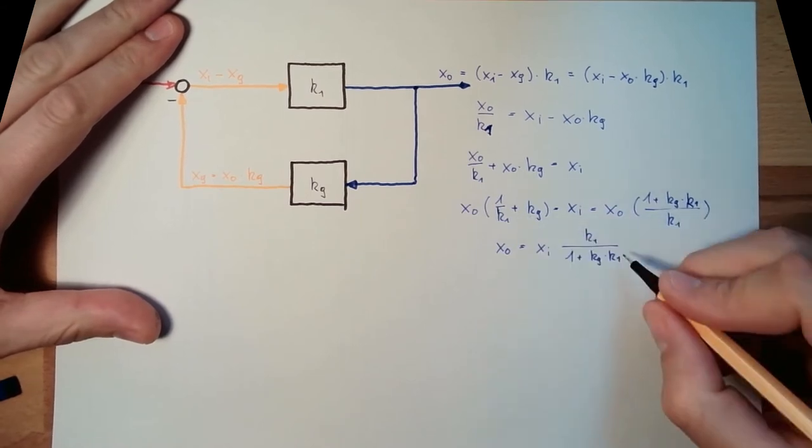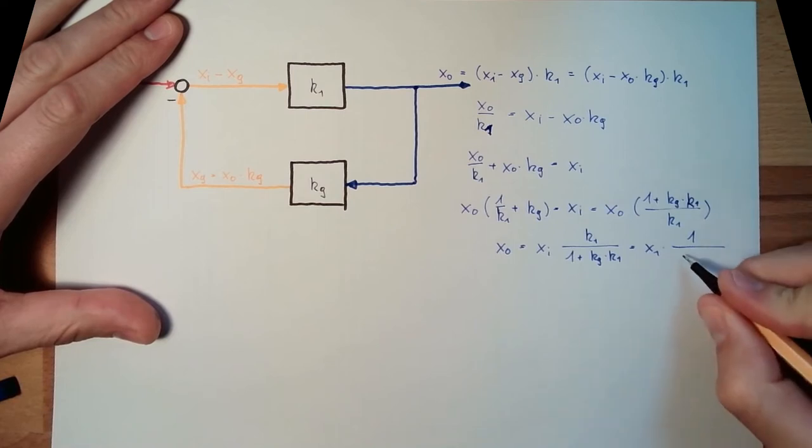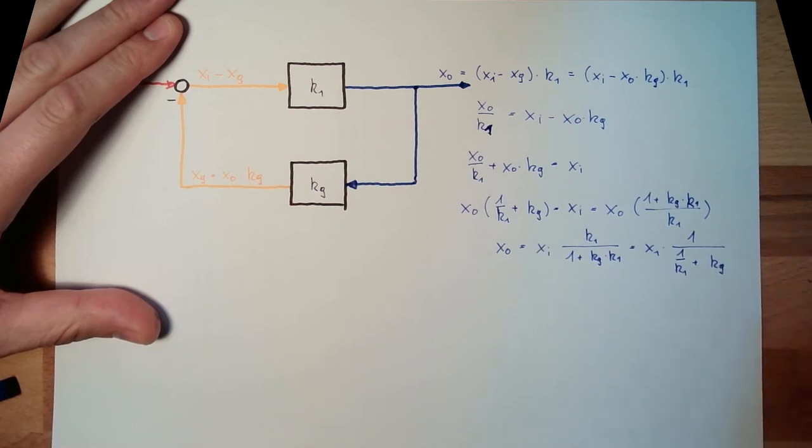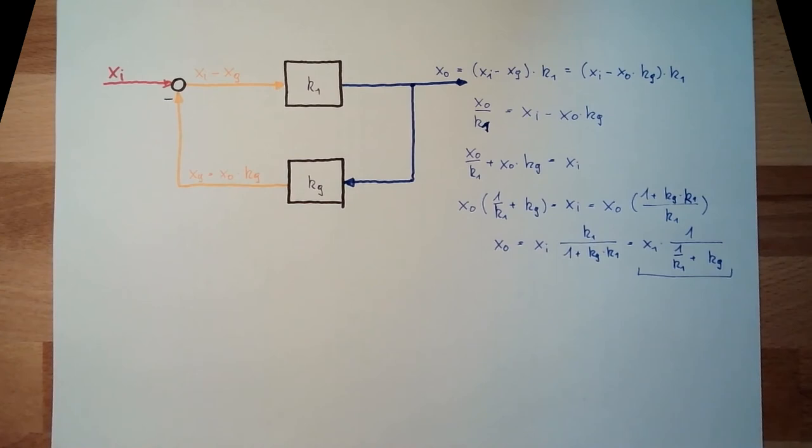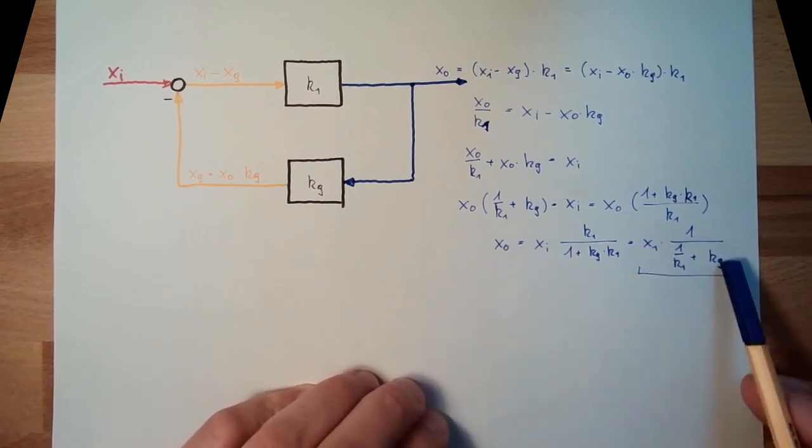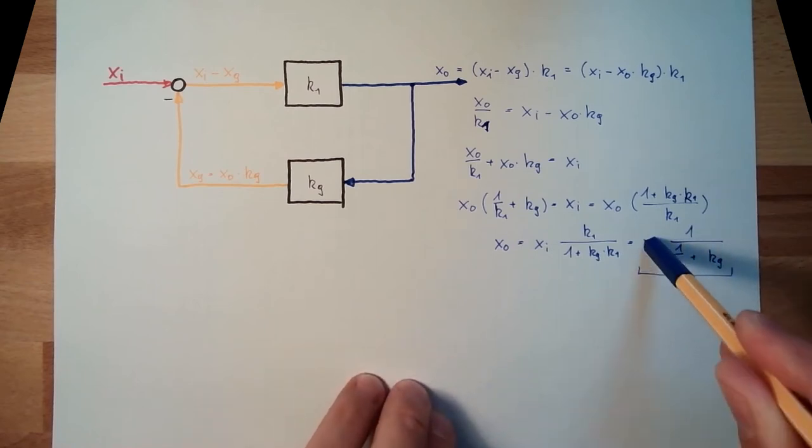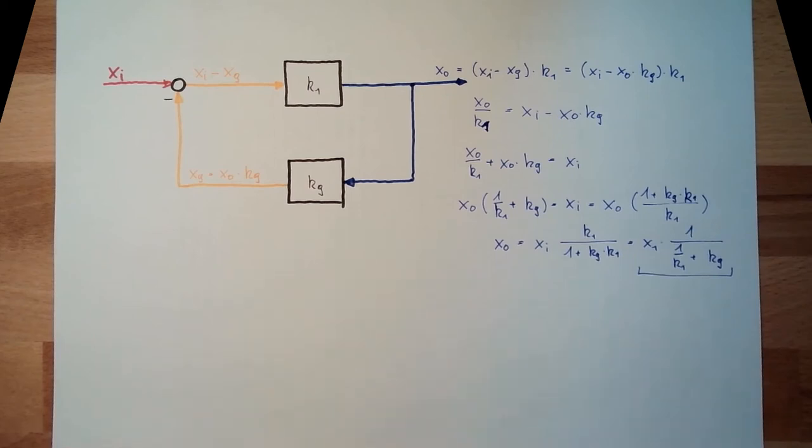Or, if I have it the other way, XI 1 divided by 1 K1 plus KG. That's the total. So, this already describes the sensitivity. If this is changing, this is changing a little bit according to this term. Let's say this is changing by 1, so this is changing 1 multiplied by this term. Interesting in this case is this here.